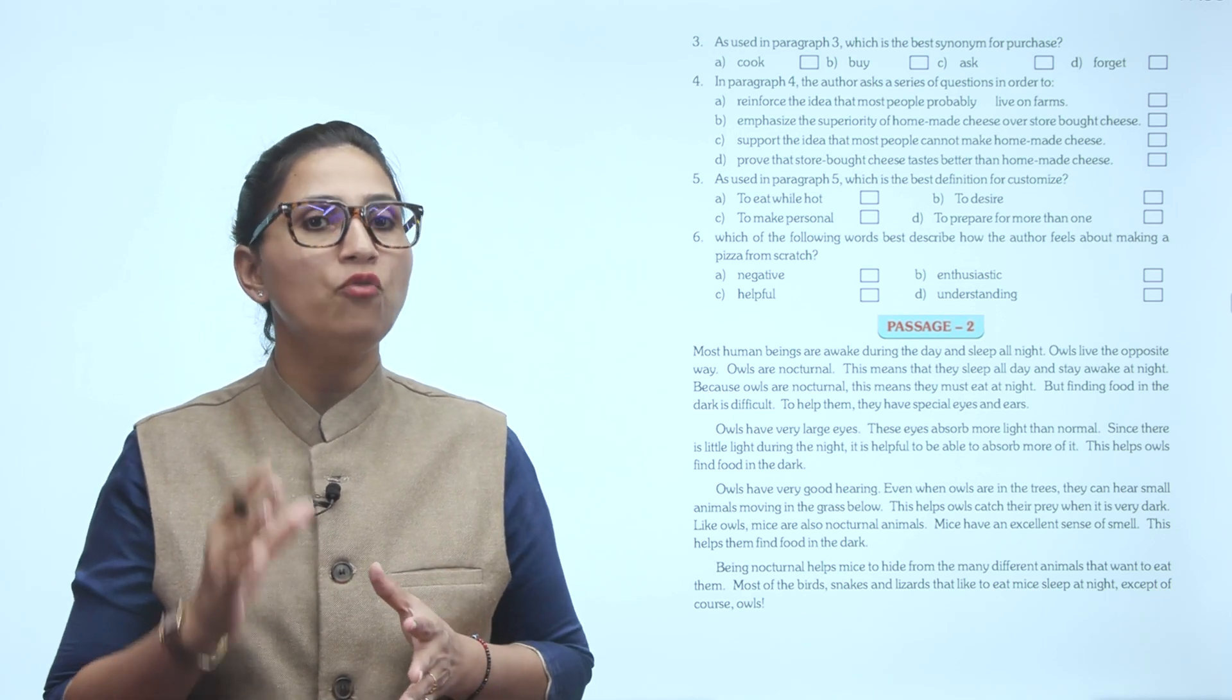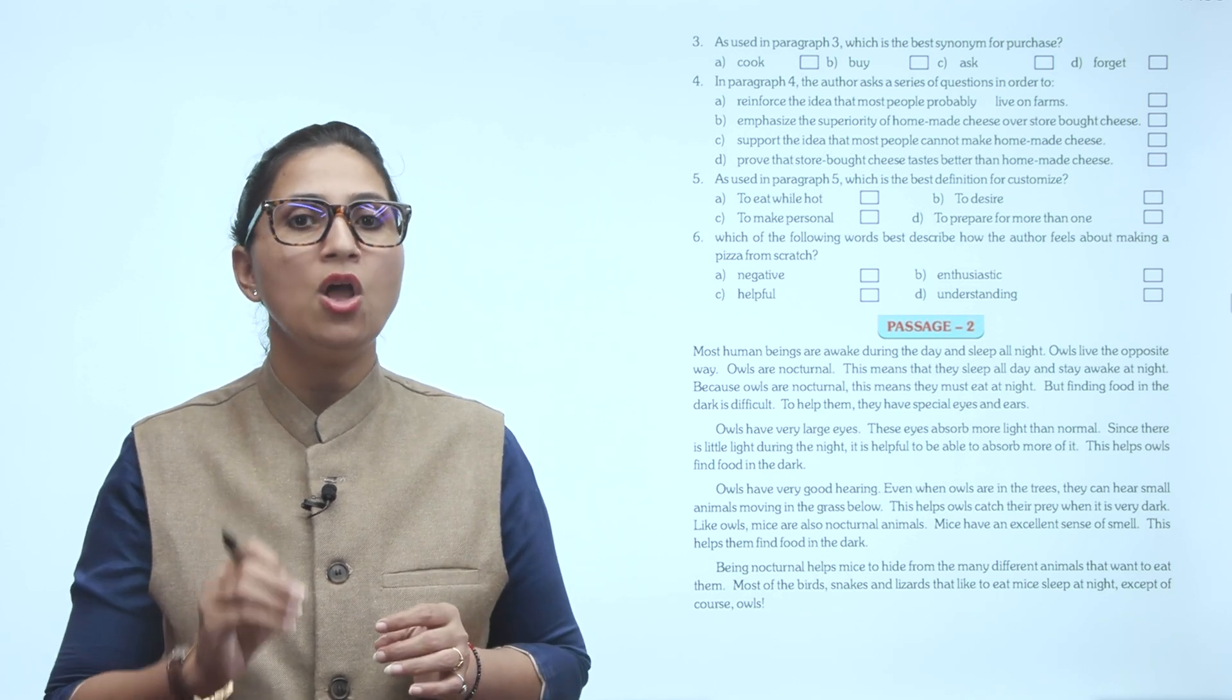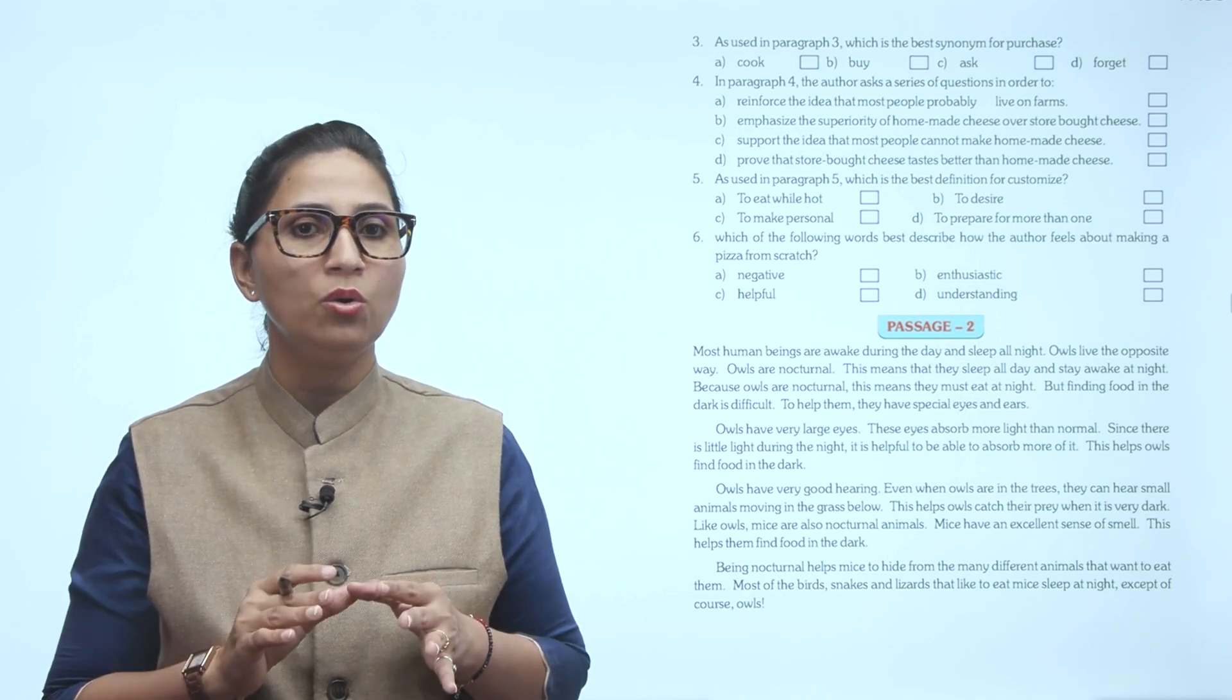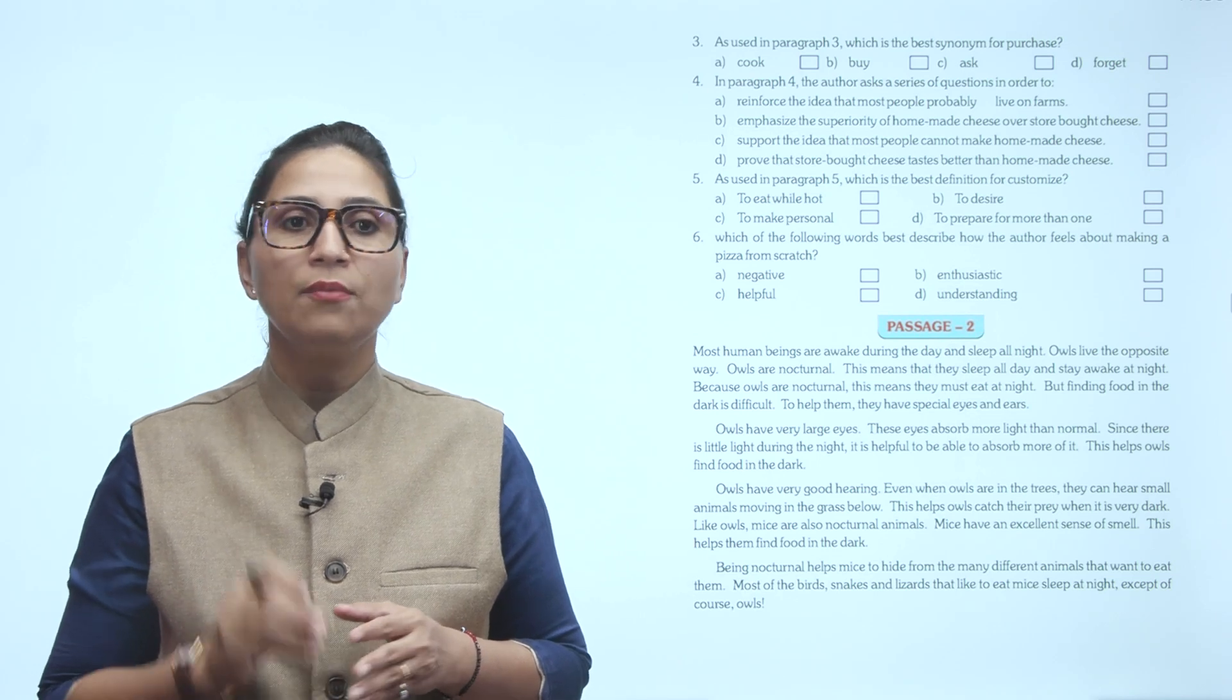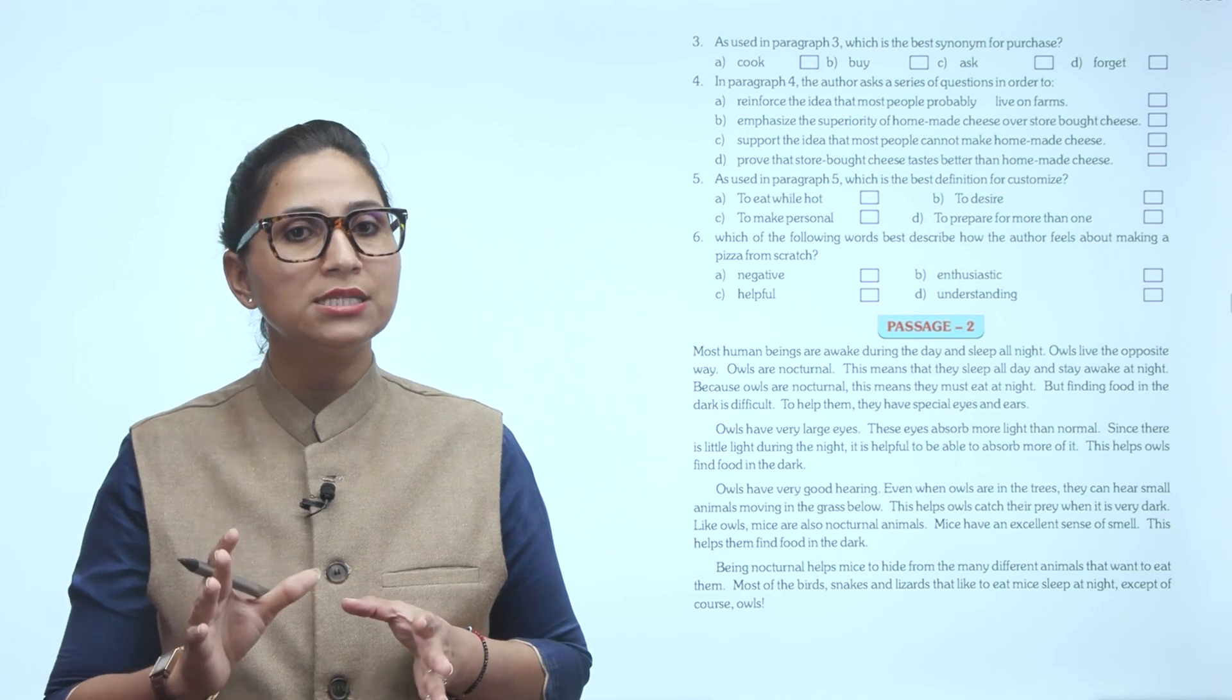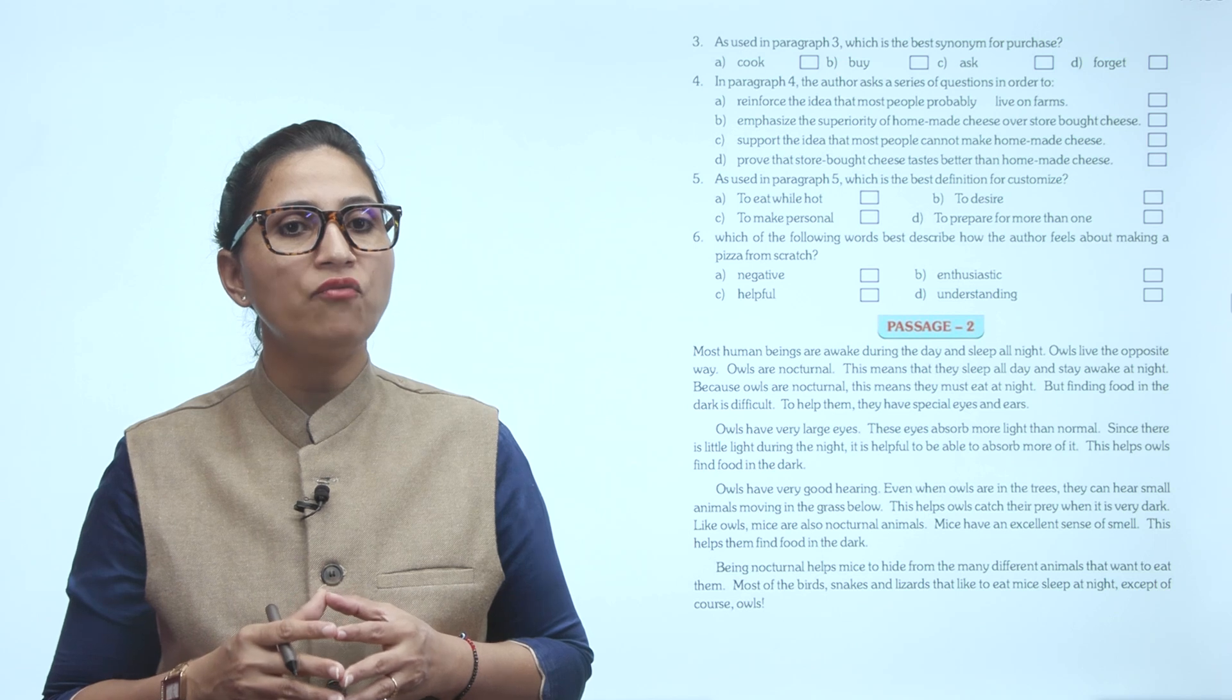Owls have very good hearing. Even when owls are in the trees, they can hear small animals moving in the grass below. This helps owls catch their prey when it is very dark. Mice are also nocturnal animals. Mice have an excellent sense of smell. This helps them find food in the dark.